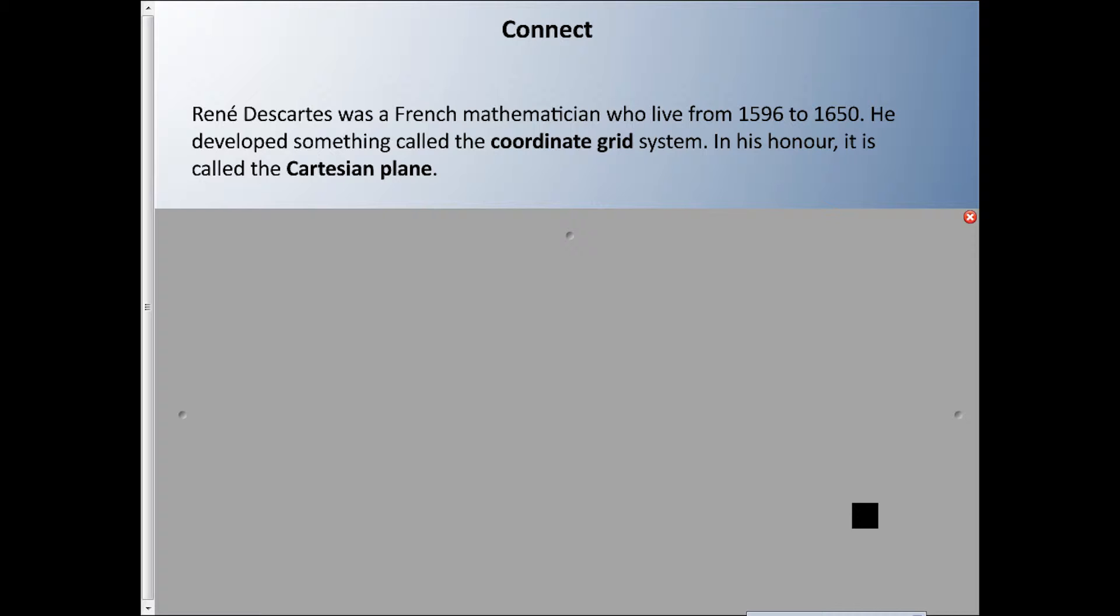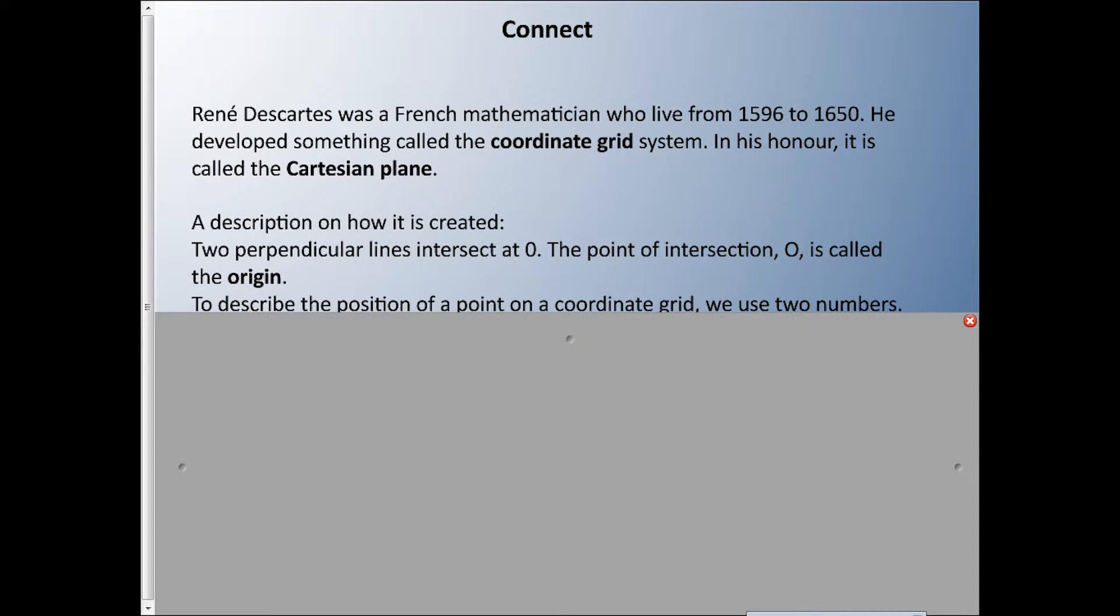René Descartes was a French mathematician who lived from 1596 to 1650. He developed something called the coordinate grid system, and in his honor it is called the Cartesian plane. It's two perpendicular lines that intersect at zero. We call that point of intersection O, or the origin. When we describe a position on a coordinate grid, we use two numbers. The numbers locate a point in relation to the origin.